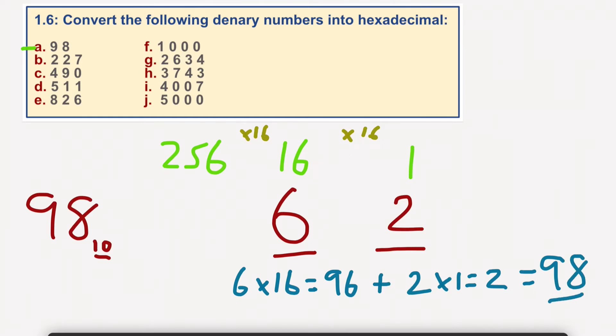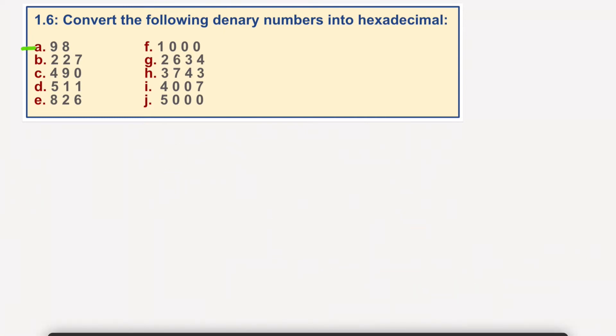We could always convert this figure into binary and then split it into nibbles, which would be an easy option as well. But this is the way of doing it straight from decimal into hexadecimal. Let's have a little go at E, 826.